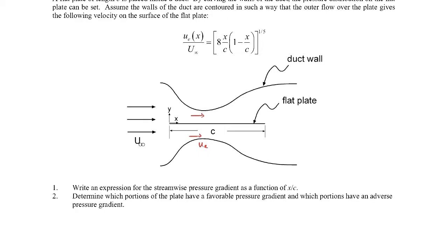The way we'll find the streamwise pressure gradient in this outer flow is to use Bernoulli's equation. There is a boundary layer forming on this plate, and we can't use Bernoulli's equation inside the boundary layer because it requires inviscid flow. But we can certainly use Bernoulli's equation in the outer flow outside of the boundary layer, because there the viscous effects are negligible. This is the velocity in that outer flow, so we can use Bernoulli's equation with that velocity.